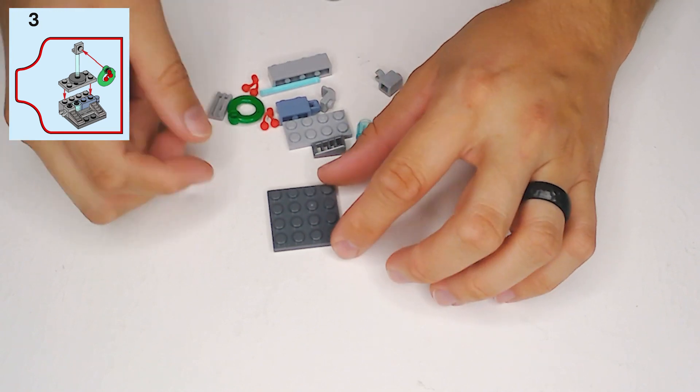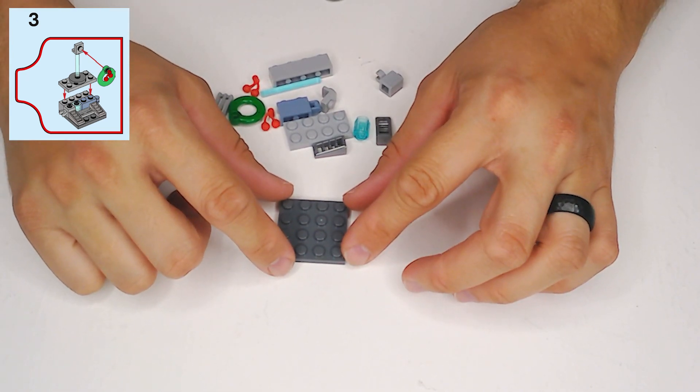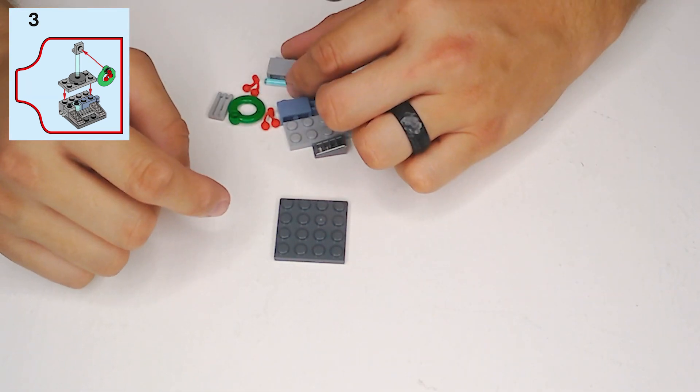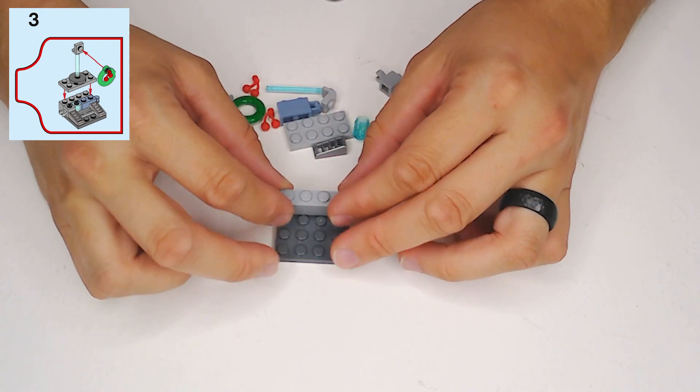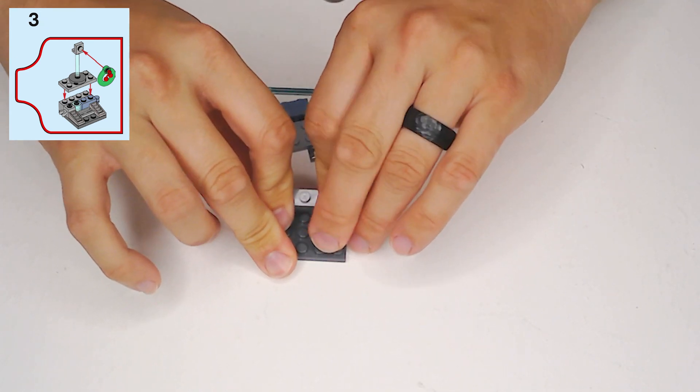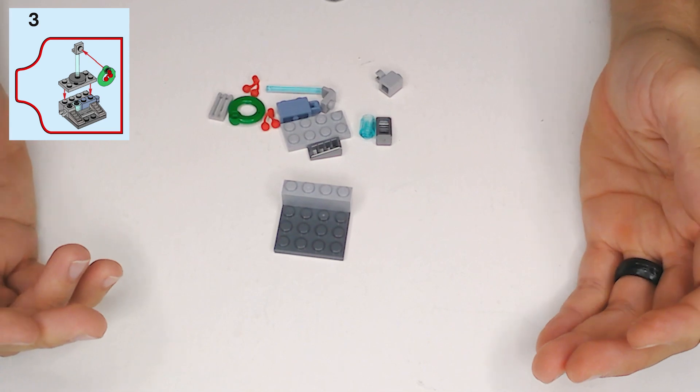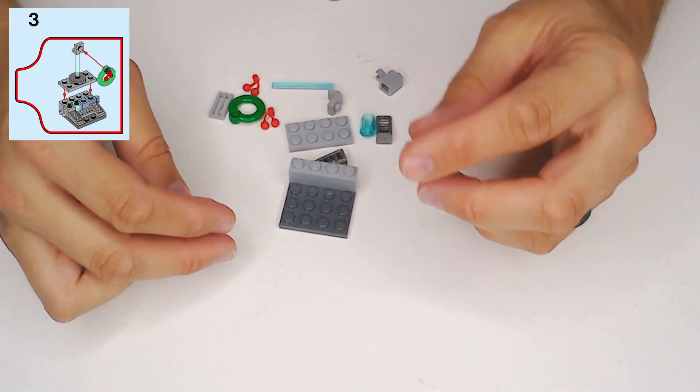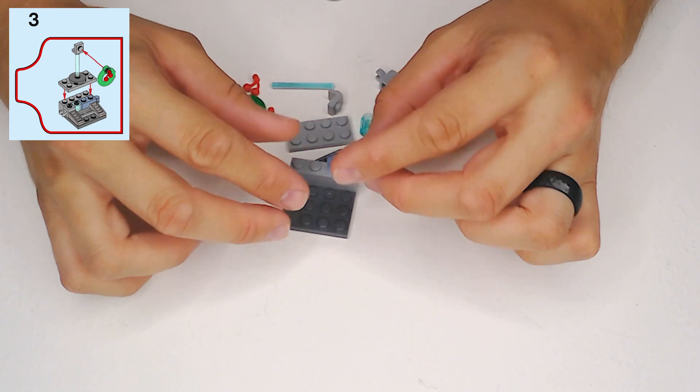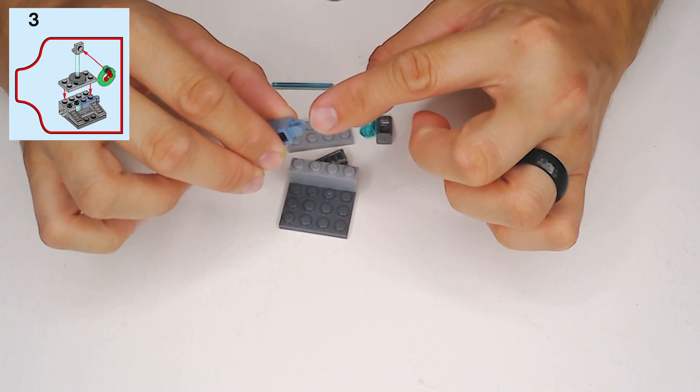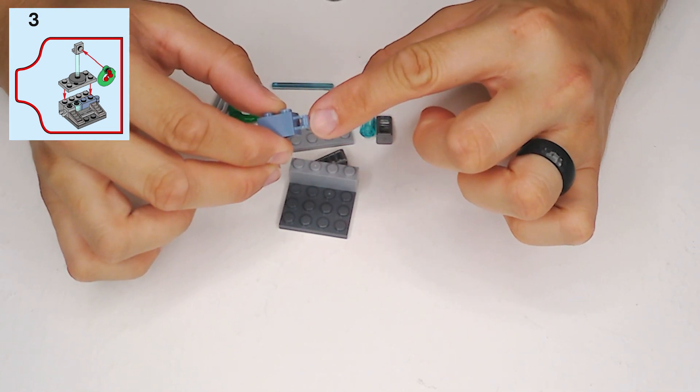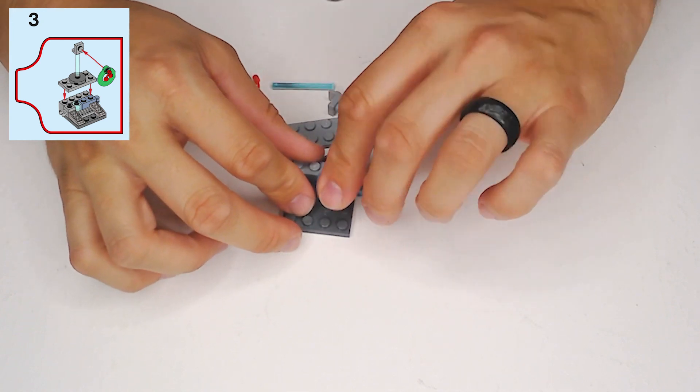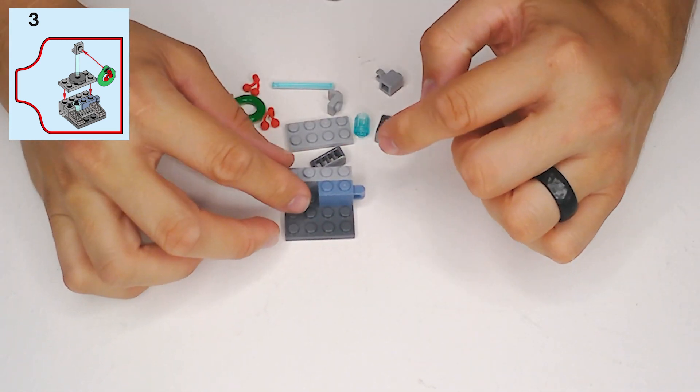Well, let's start out with this dark gray 4x4 plate. And then across the back, let's get this light gray 1x4 block across the back edge. And then in front of that, we're going to want to put this grayish blue 1x2 block with this kind of bar handle tab sticking outside. It's kind of an unusual little piece there.